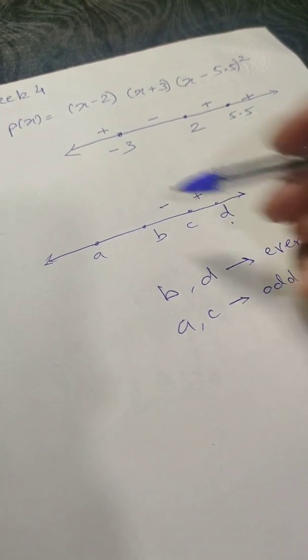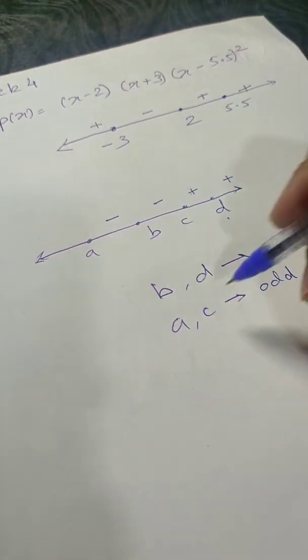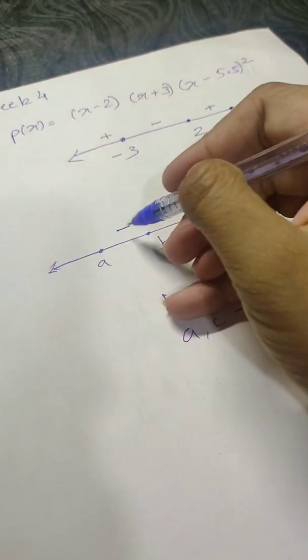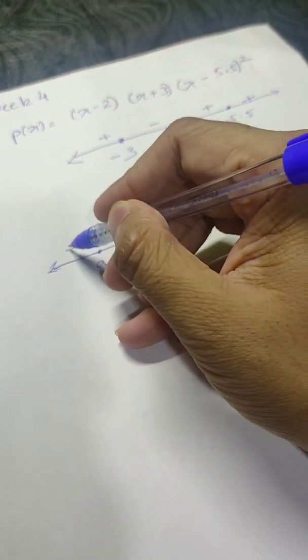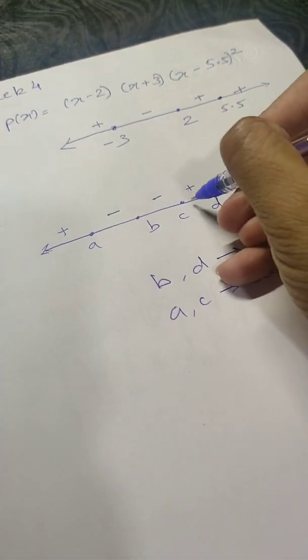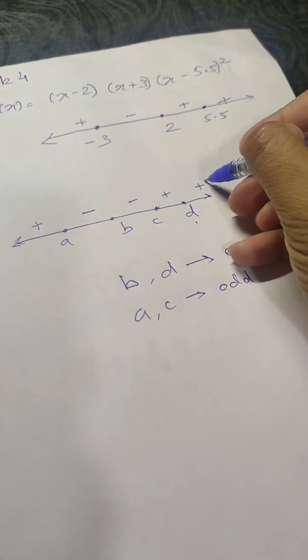And again with b, since it's even, the sign will remain the same. And for a, since it's odd, the sign will change. So this will be the range.